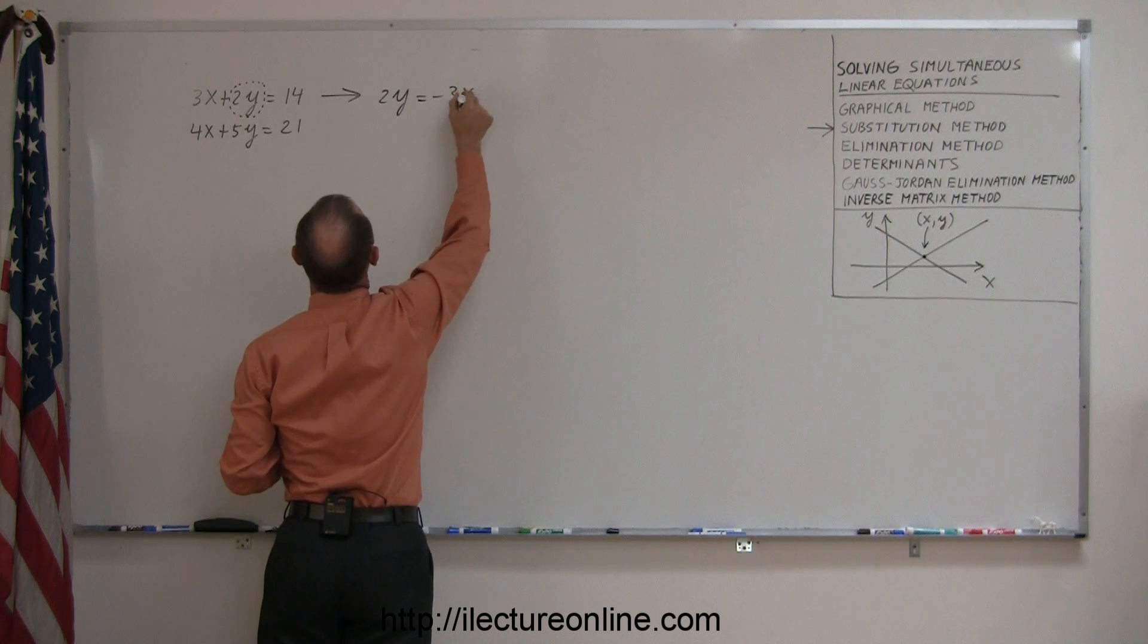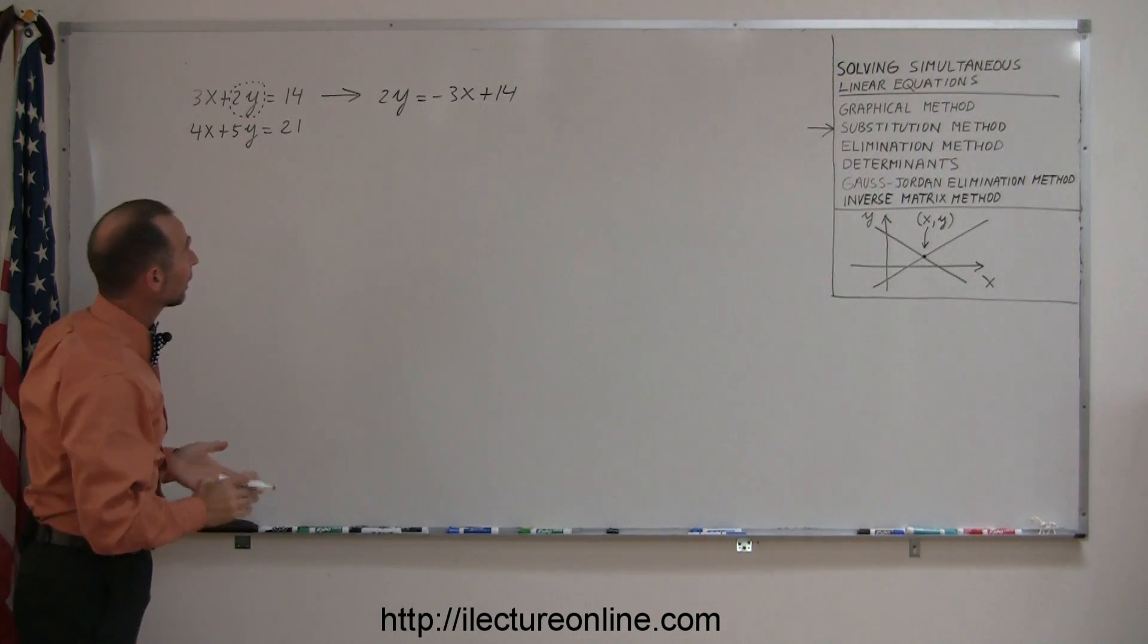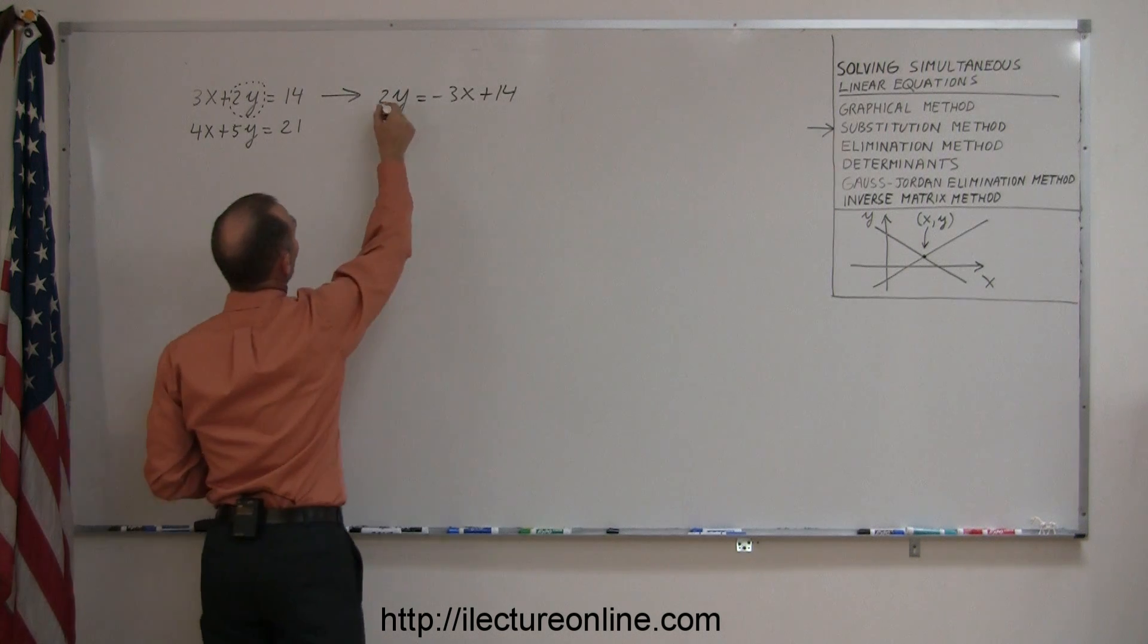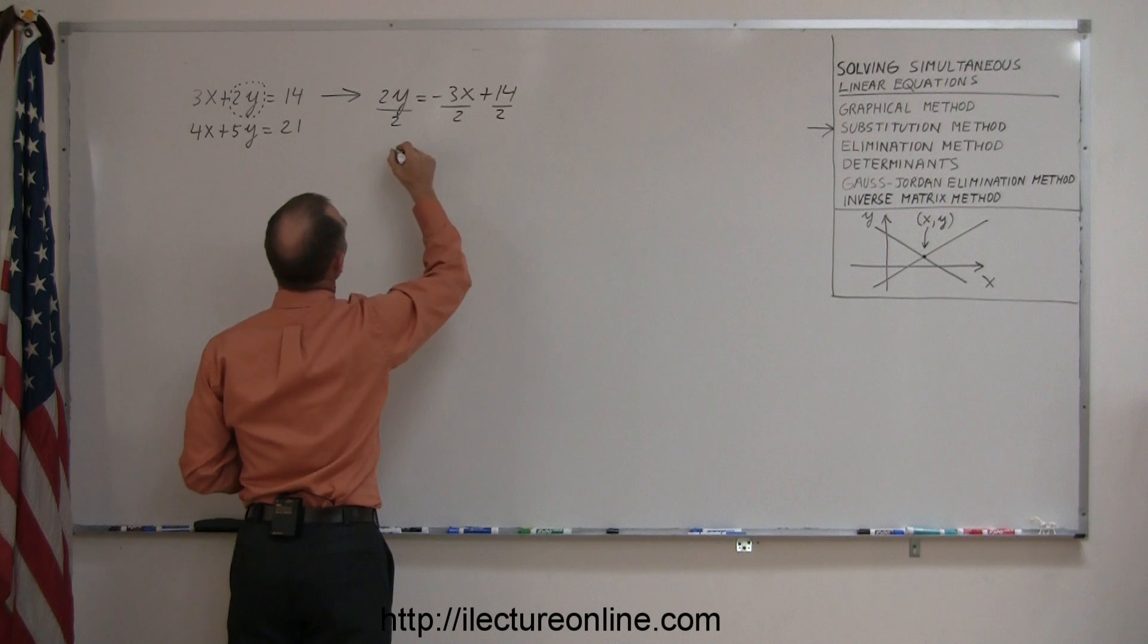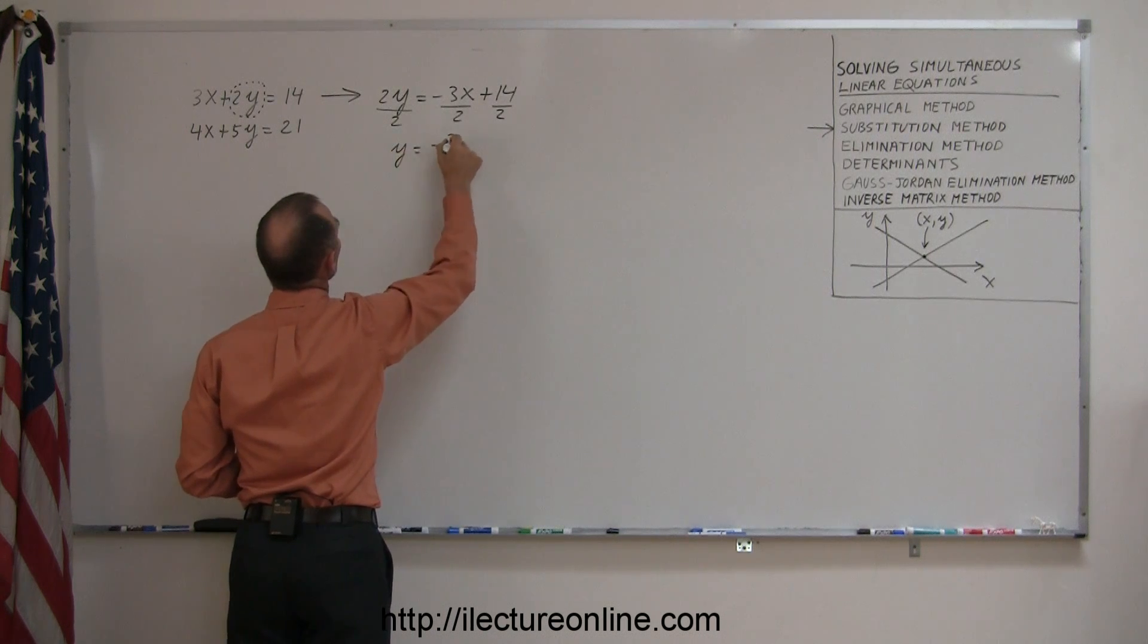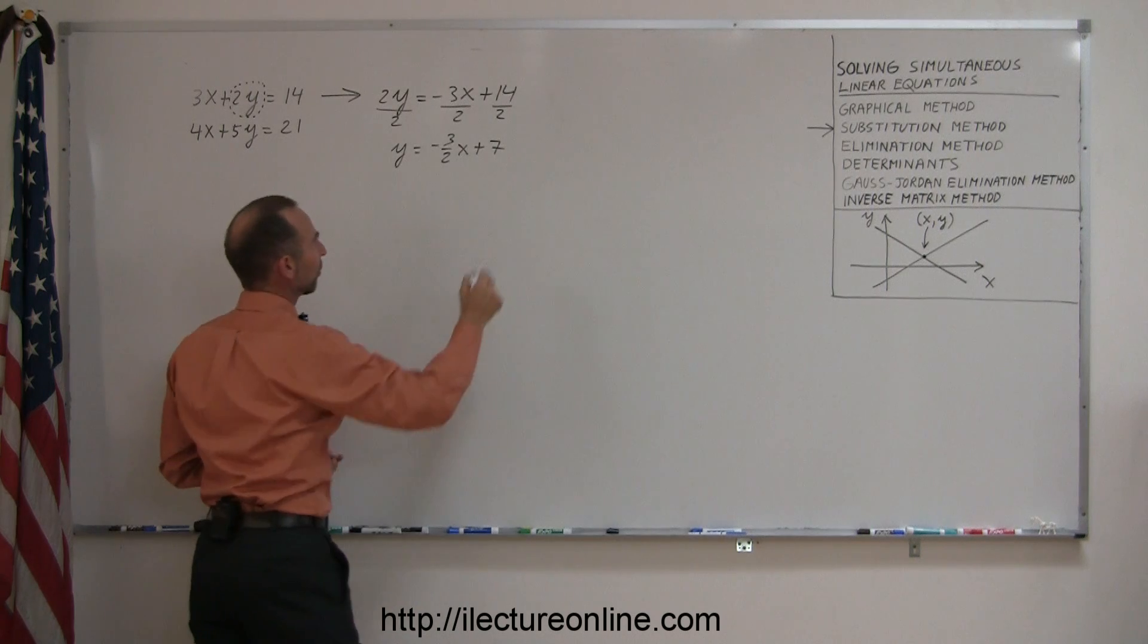And now I don't want a 2y there, I want a y, so I'm going to divide both sides of the equation by 2. And so this becomes y equals minus 3 over 2x plus 7. So there's my first equation.